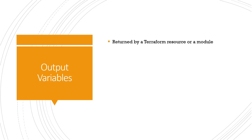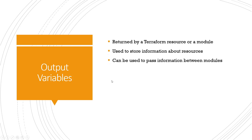So what exactly is an output variable? An output variable is a named value that is returned by a Terraform resource or a module. Output variables can be used to store information about the resources that have been created, such as IP addresses or DNS names. They can also be used to pass information between modules. Output variables are declared in the output block of a Terraform configuration file. We can also use these output variables to store sensitive information such as passwords or API keys.